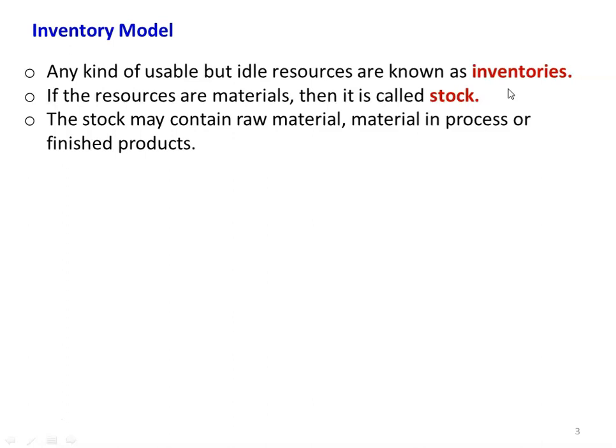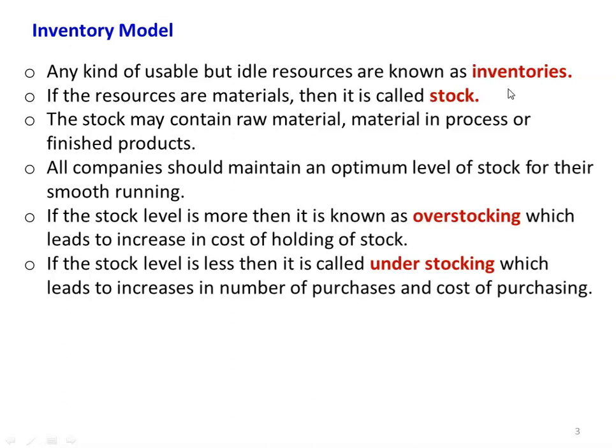If the resources are material, then it is called stock. For example, a store of the workshop — there it is called stock. The stock may contain raw material, material in process, finished product, or any item — grocery items stored in the department store. You take any commodity at a sales outlet, such as a TV company outlet with different TV models as stock. We have a certain level of stock at any sales point.